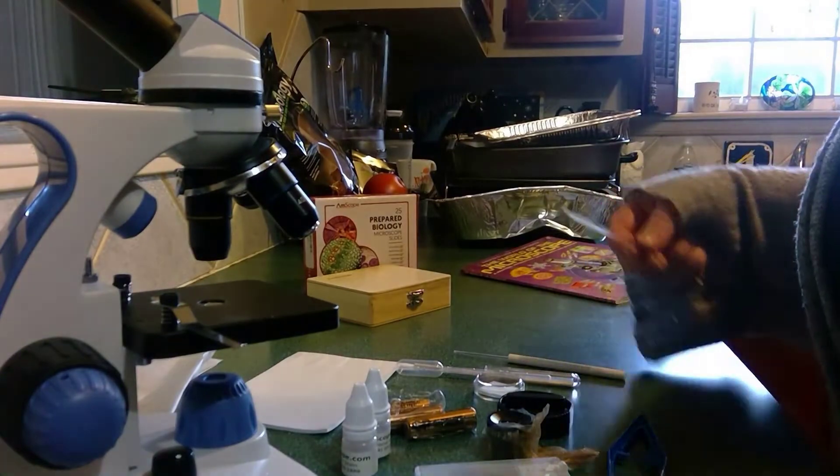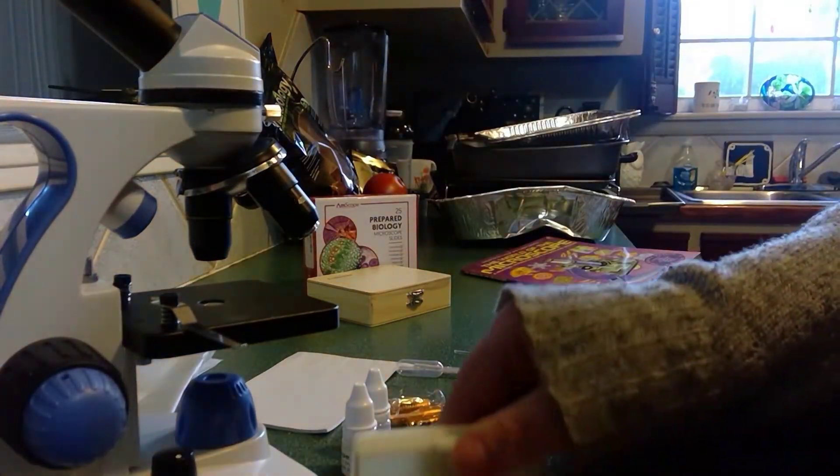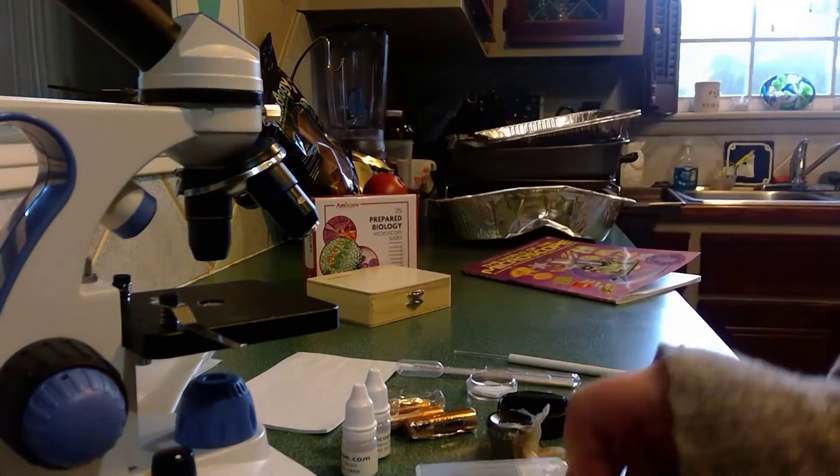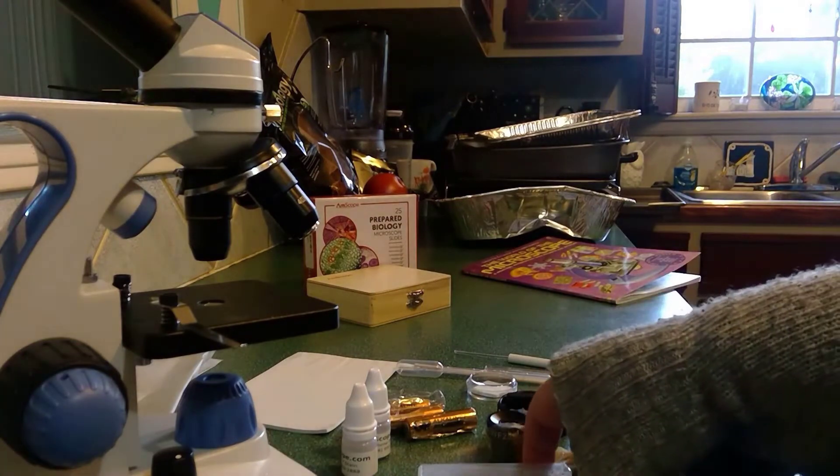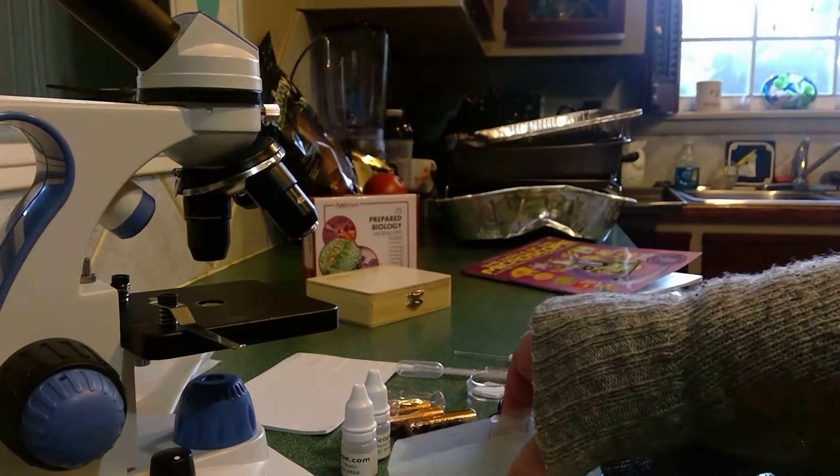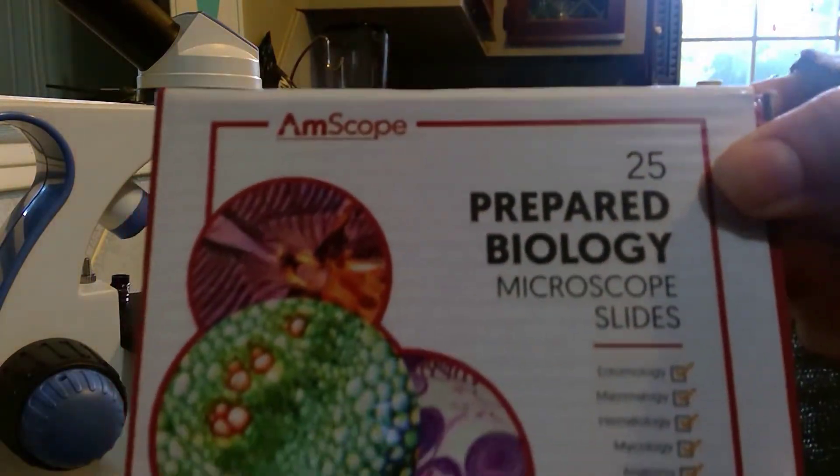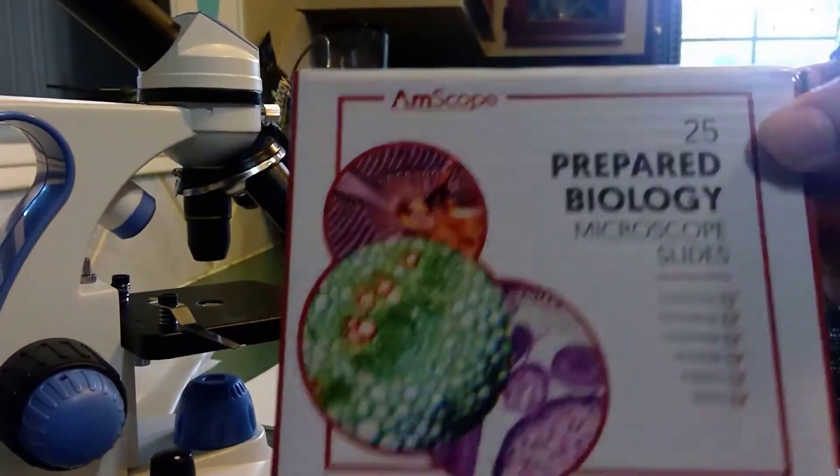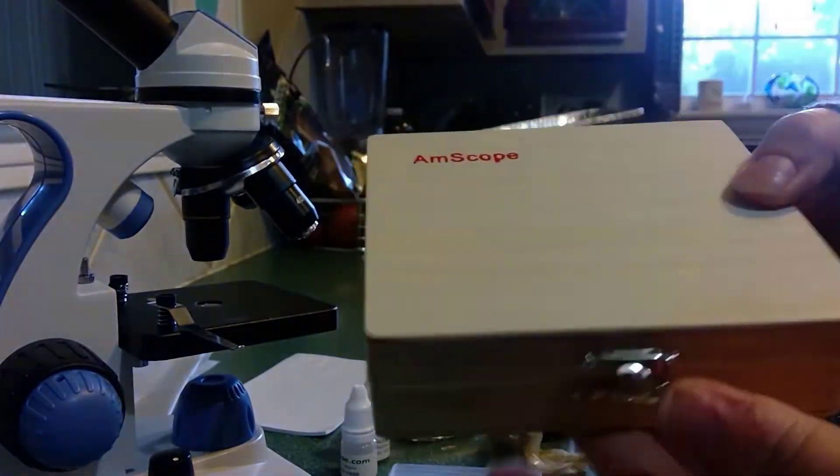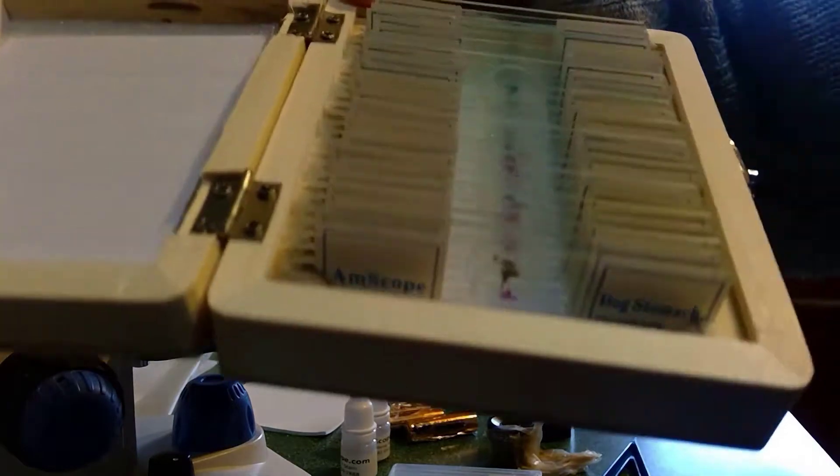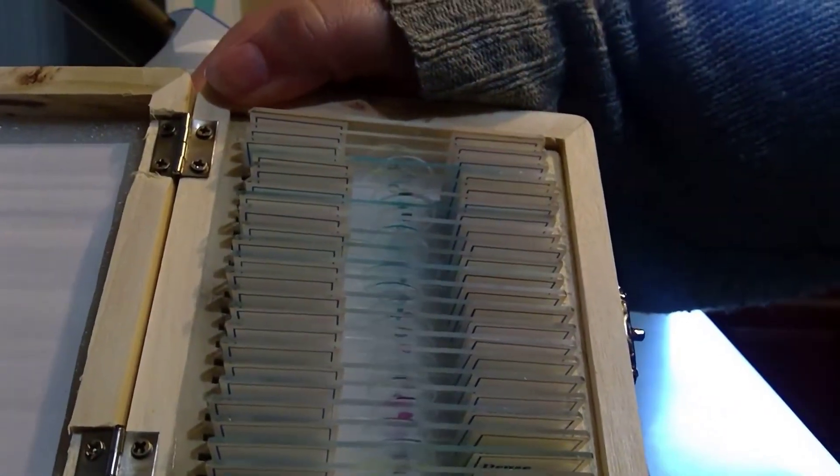I showed you these prepared slides and it does have blank slides so that you can make your own. And I can't remember if these ones are the ones that came with it because I mixed everything together, or if these are the ones that came with the set. But you'd have to take a look at the site if you're interested. But I bought these ones separately. They're 25 prepared biology microscope slides. And this is also from Amscope, and it comes in a really nice wooden box. And it's just got tons of prepared slides in it. And the girls will have a lot of fun taking a look at this stuff.